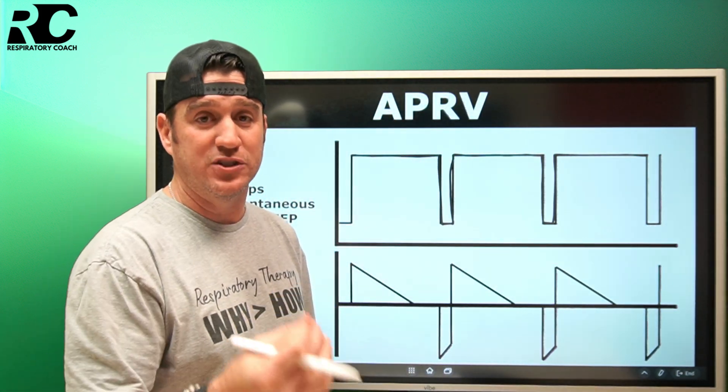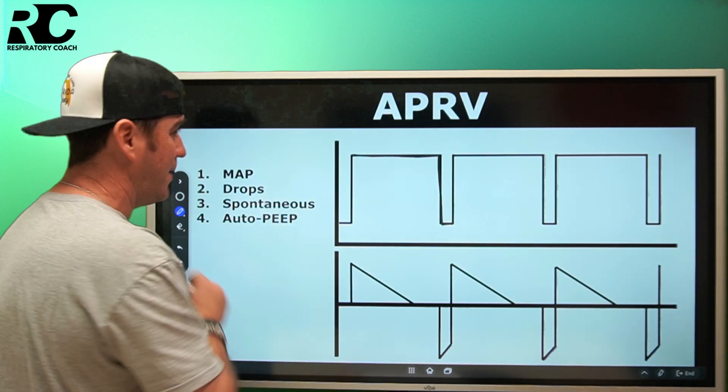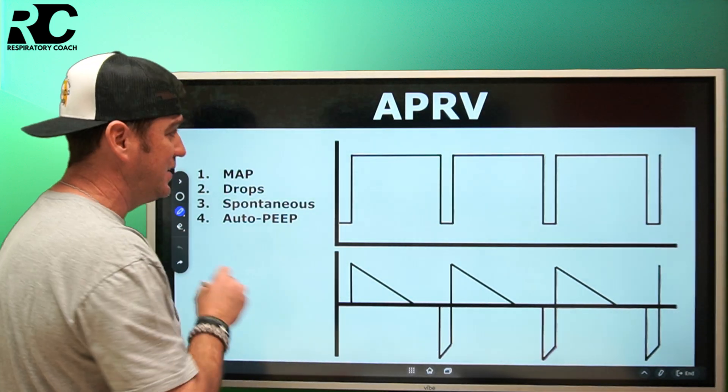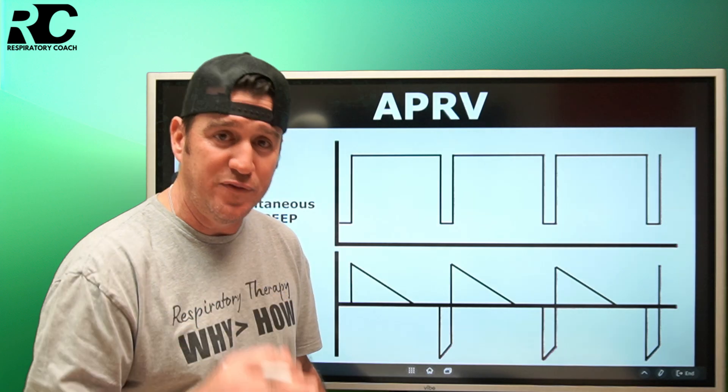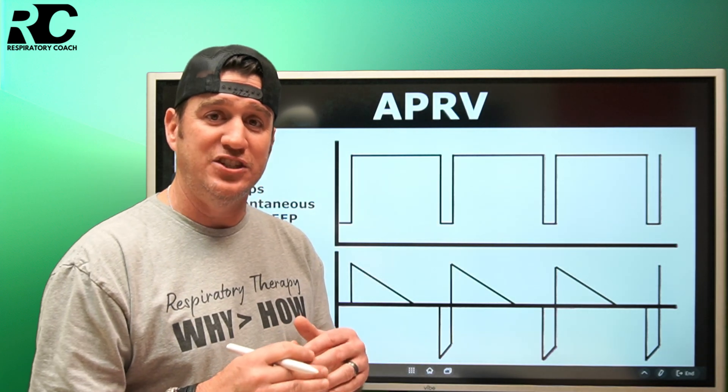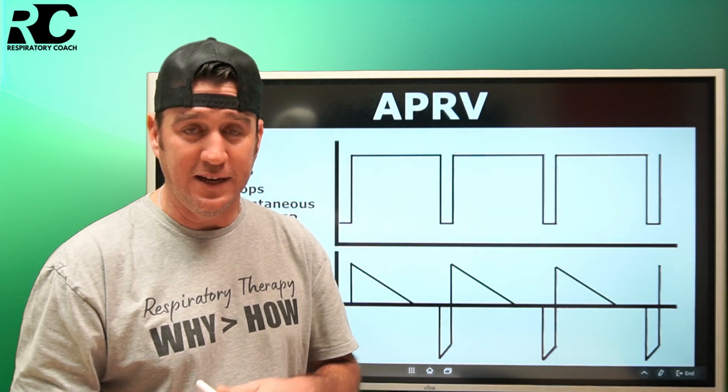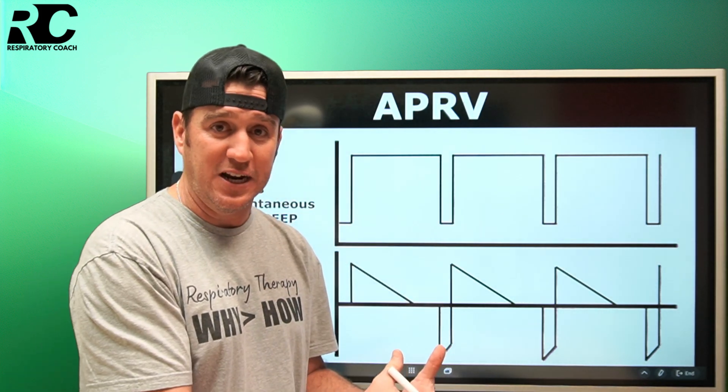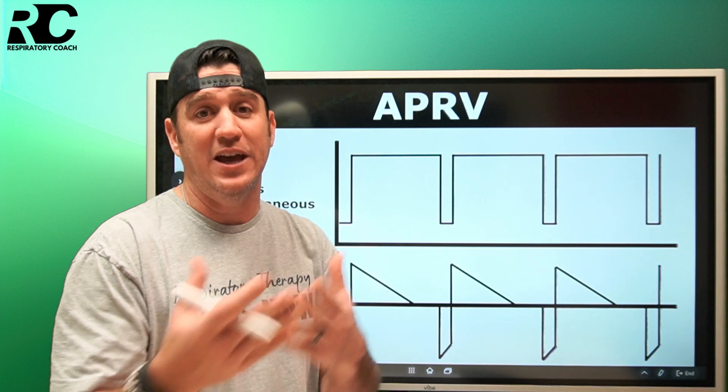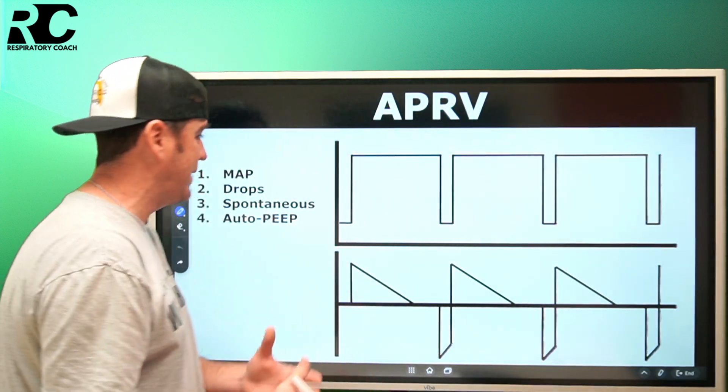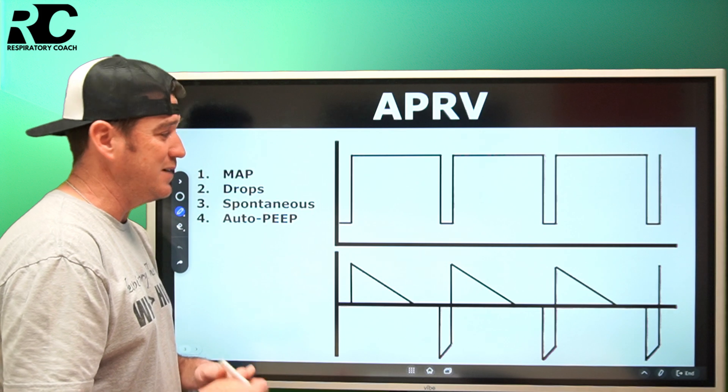It was described early on as two varying CPAP levels that generated a pressure gradient to do two primary things: one, to establish mean airway pressure, but also to aid with ventilation. We're going to dive in and talk about those here in just a second.